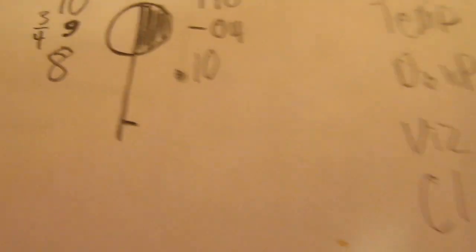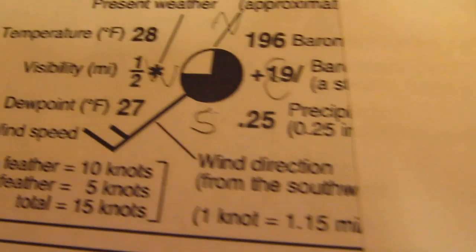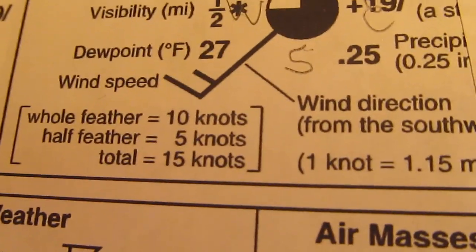We could see that the wind is out of the south. So wind is south, and that is at, what is our wind speed? Well, it's only one small feather. So we know that the wind is at 5 knots.